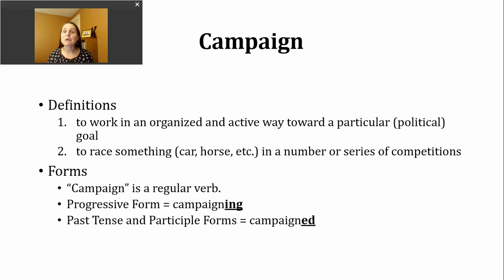You should note that campaign is a regular verb. To make the progressive tense, all we need to do is add -ing to form campaigning. The past tense and participle forms of this verb are made by adding -ed. Since the verb campaign ends in an N or a voiced N sound, the -ed is going to make a D sound: campaigned.